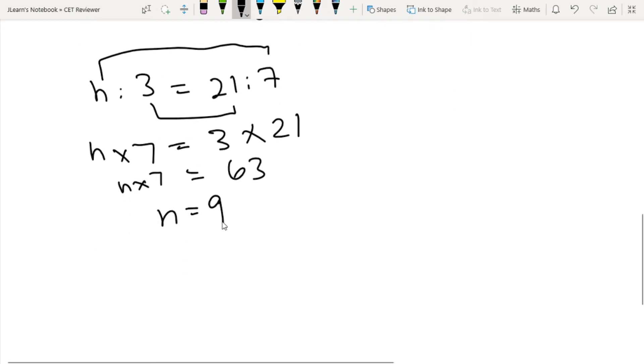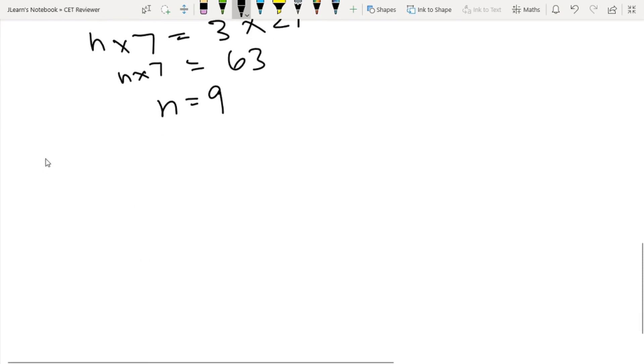So, we have types of proportions. The first one is direct proportion.